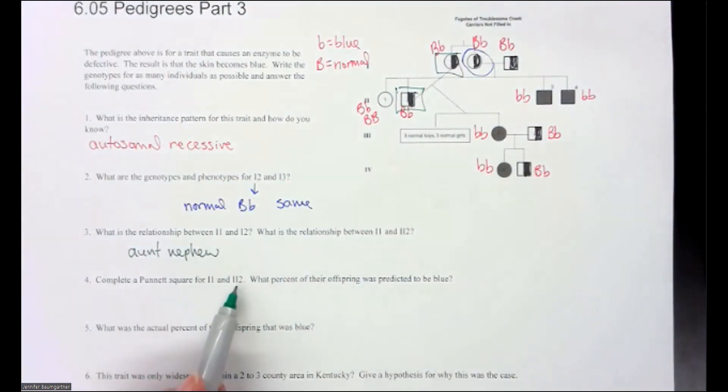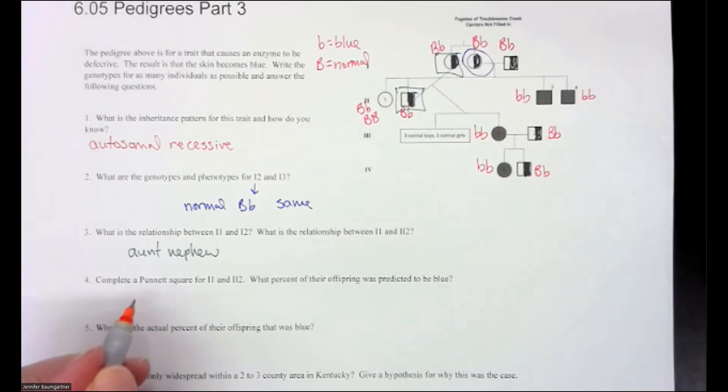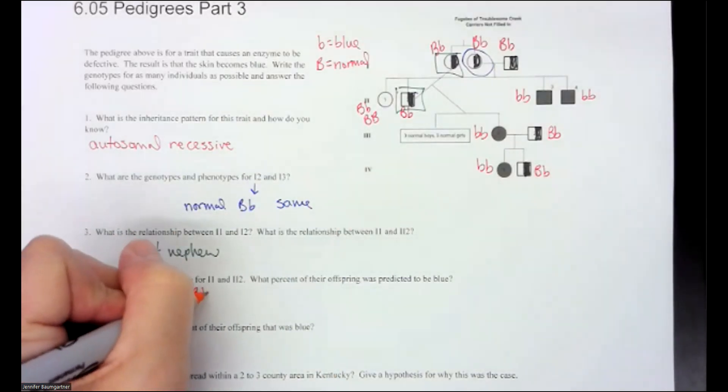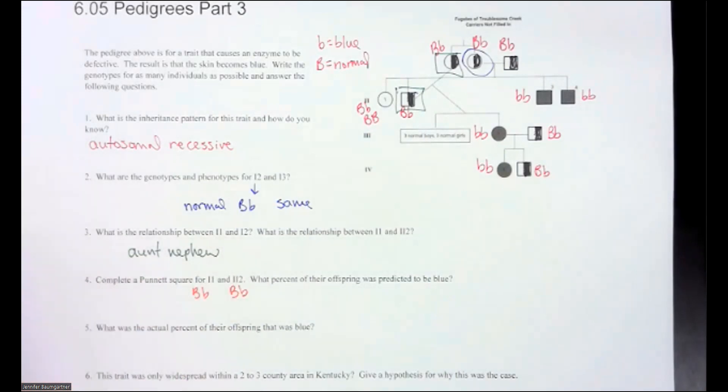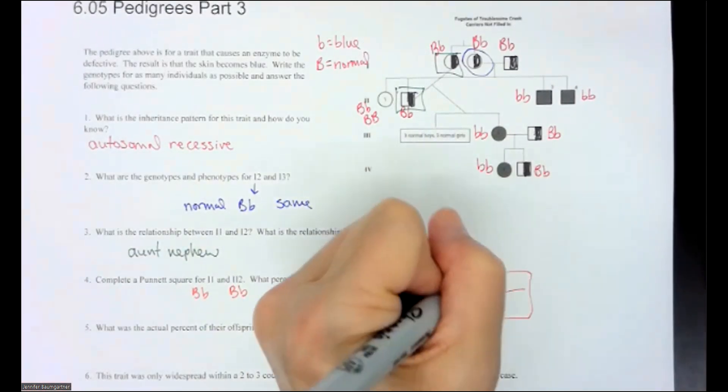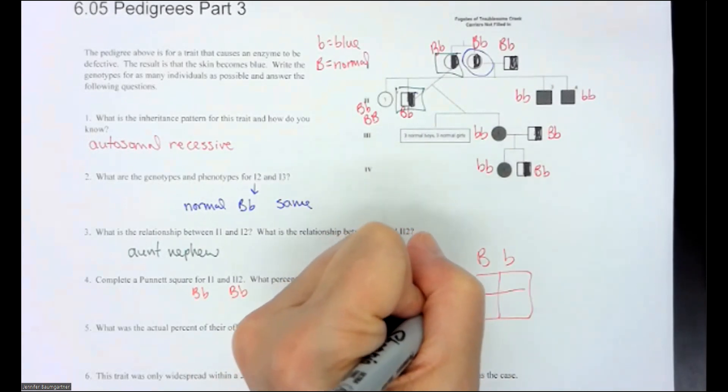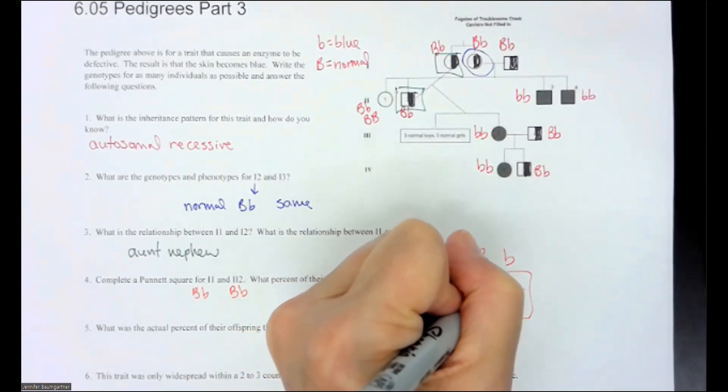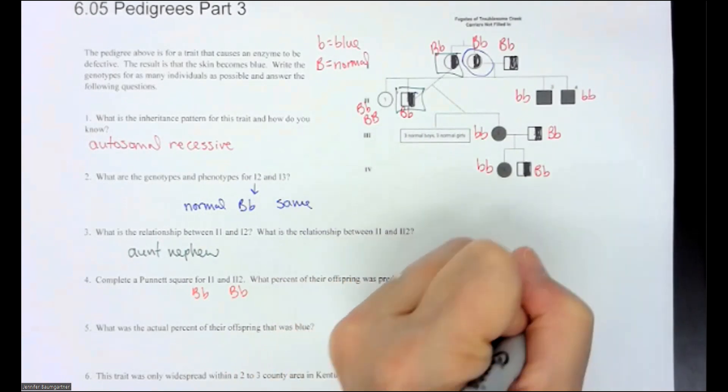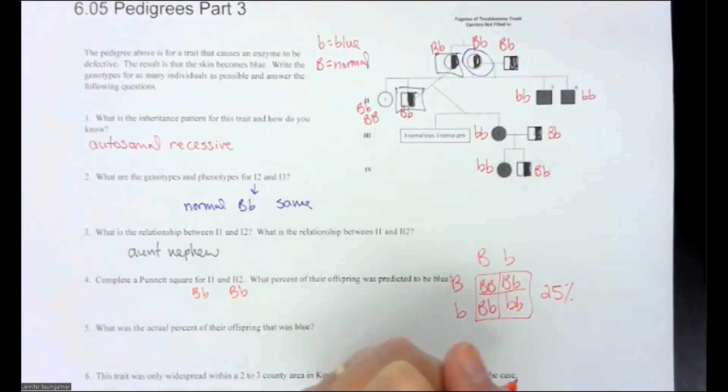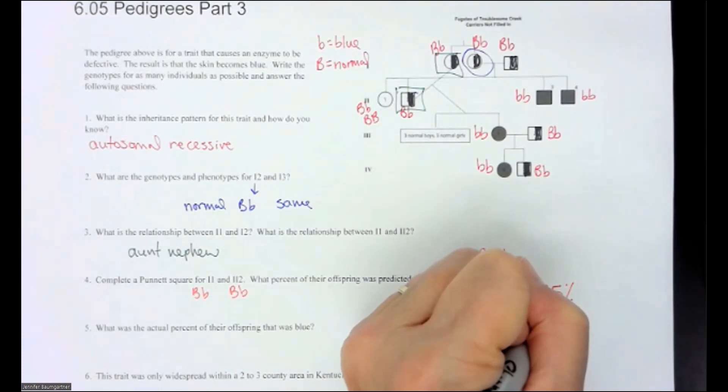Complete a Punnett square for 1-1 and 1-2. What percent of their offspring was predicted to be blue? So we have two heterozygous. 1-1 and 1-2. I'm sorry, 2-2. Then we've done this many times before. This is our typical heterozygous cross, where we say 25% of the offspring should be blue.